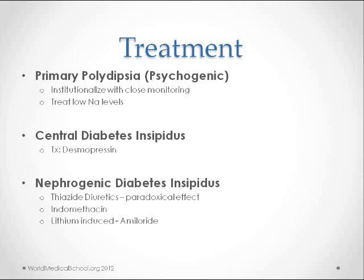Indomethacin is a non-steroidal anti-inflammatory drug, or NSAID, which inhibits prostaglandin synthesis and reduces the delivery of solute to distal tubules, thus reducing urine volume and increasing urine osmolality. For lithium-induced diabetes insipidus, amiloride, which is a potassium-sparing diuretic, has been shown to be useful because it blocks uptake of lithium into principal cells, allowing them to regain responsiveness to ADH.